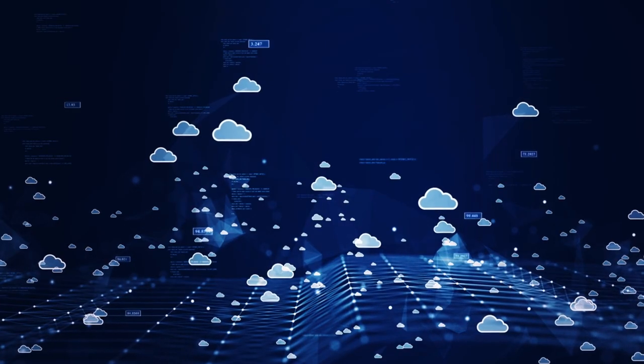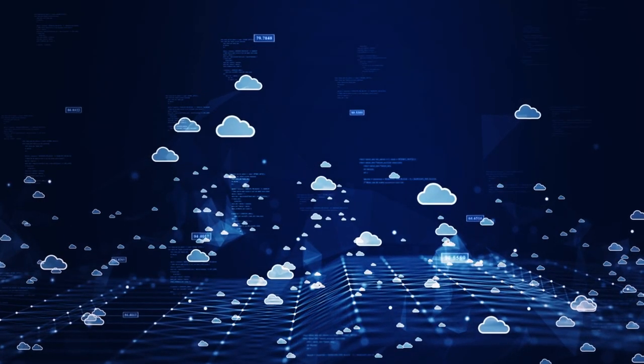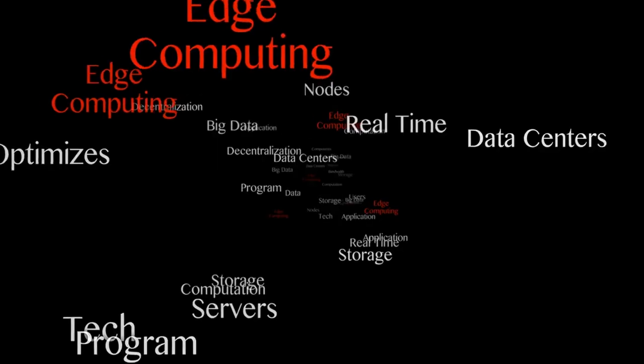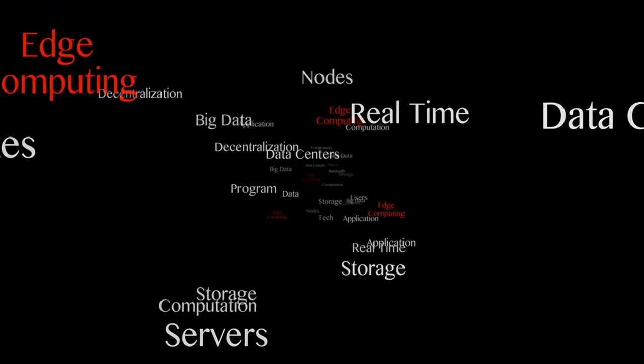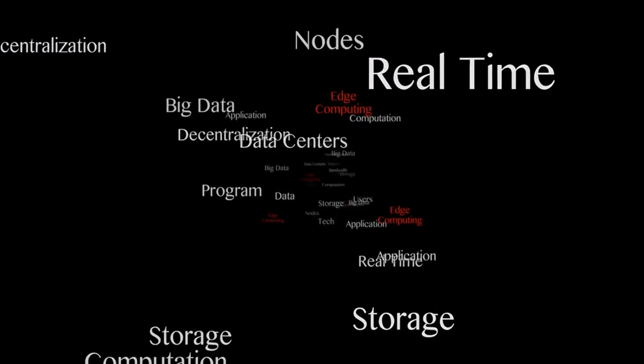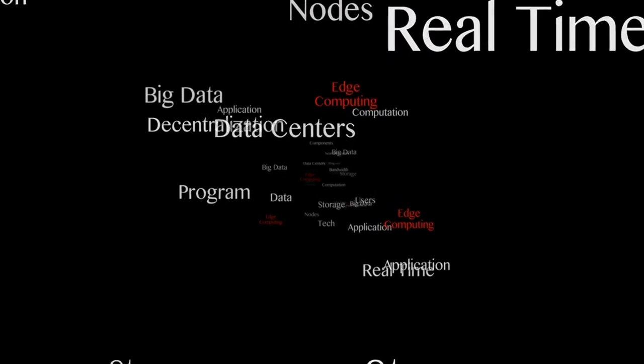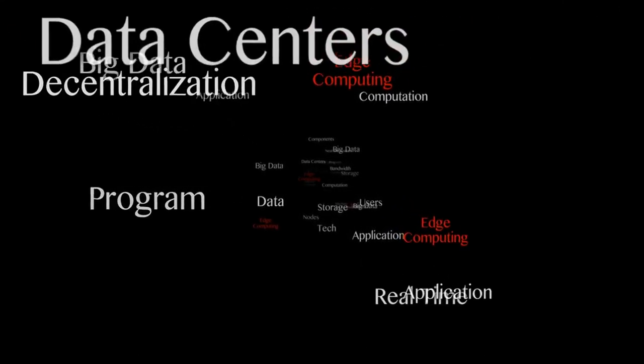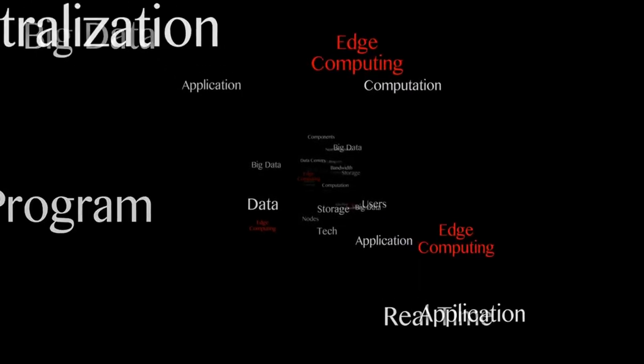How does edge computing help optimize traffic flow in real time? Edge computing can optimize traffic flow in real time by bringing processing and storage closer to the source of data generation, enabling real-time processing and analysis.